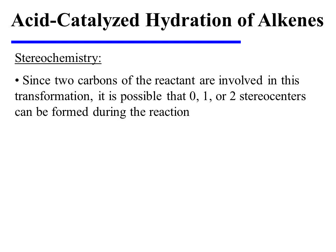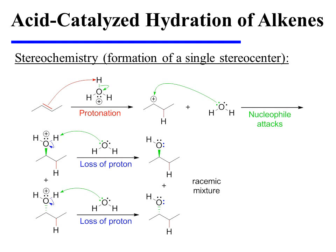Stereochemistry is sometimes a concern in acid-catalyzed hydrations. There are two carbons of the reactant involved in this transformation. Sometimes no stereocenters will be formed during the reaction, but it is also possible that one or even two stereocenters may be formed. In this specific example, a symmetrical alkene substrate undergoes acid-catalyzed hydration, and the product will ultimately contain a single stereocenter. During the protonation step, it does not matter which alkene carbon acquires the new proton because of the molecule's symmetry.